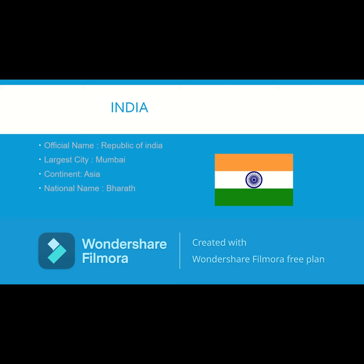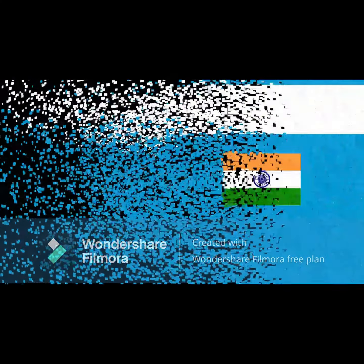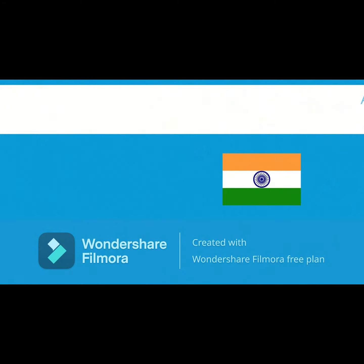National Name: Bharat. Number of States: 28. Union Territories: 8. National Anthem: Jana Gana Mana. National Bird: Peacock. National Flower: Lotus.